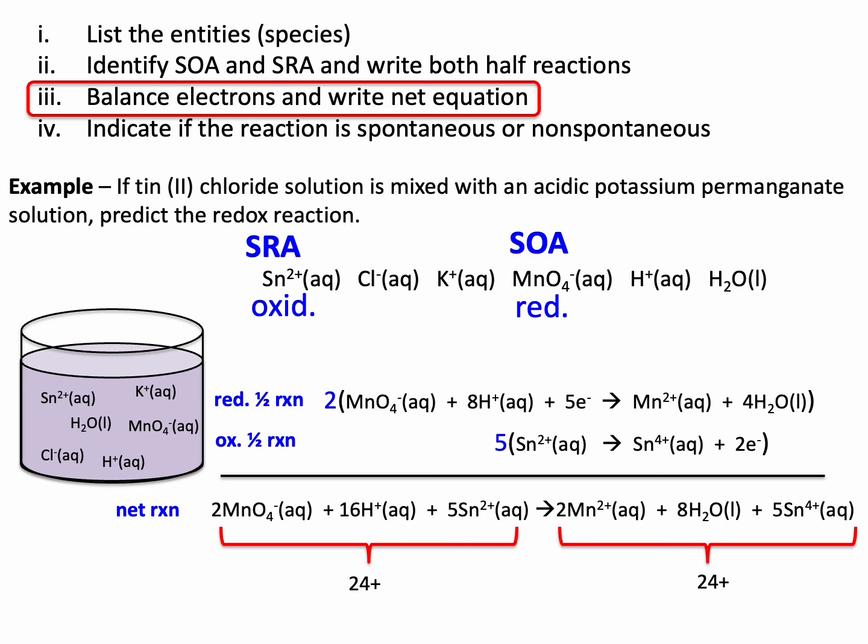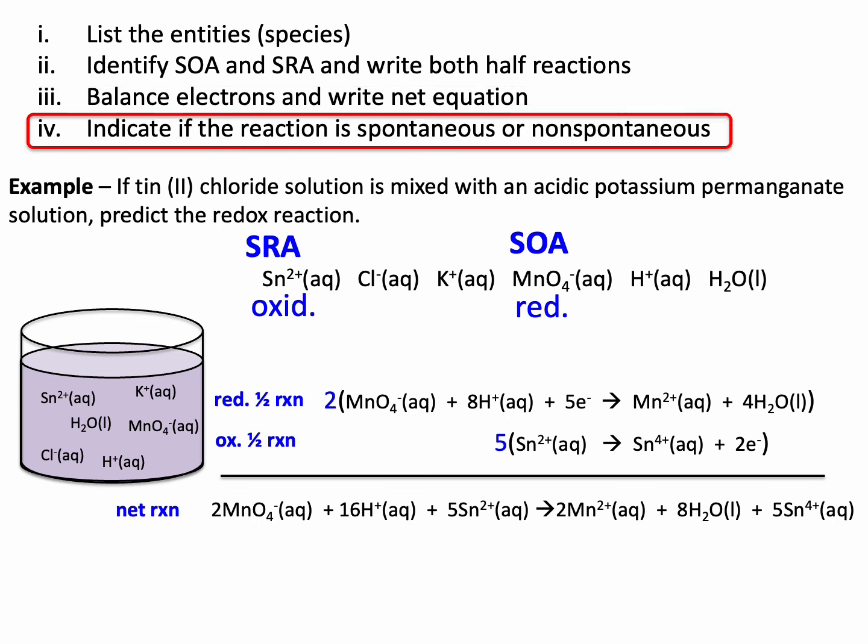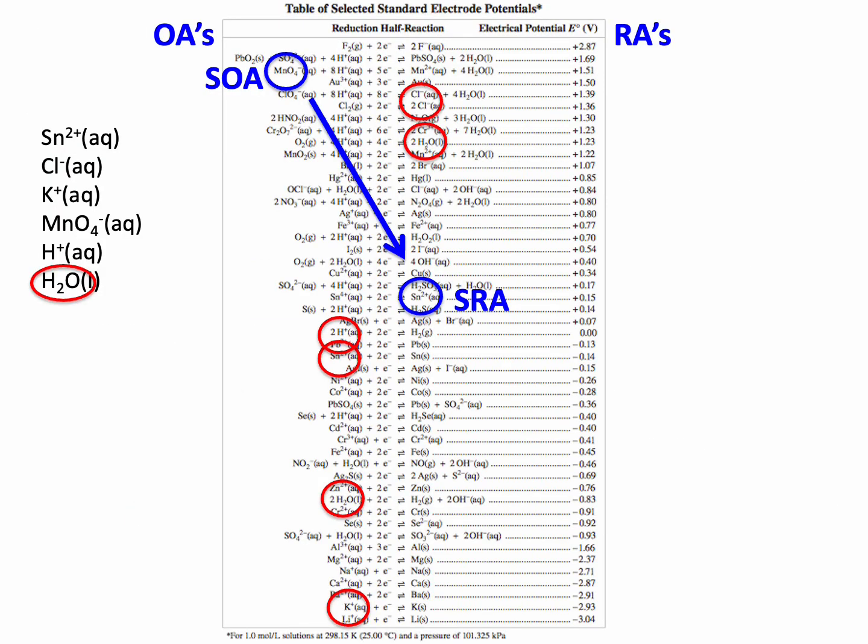That is how you devise a net reaction using a table of reduction half reactions. Let's indicate if this reaction is spontaneous or not. Of course, we know the OA is above the RA, so this is spontaneous.